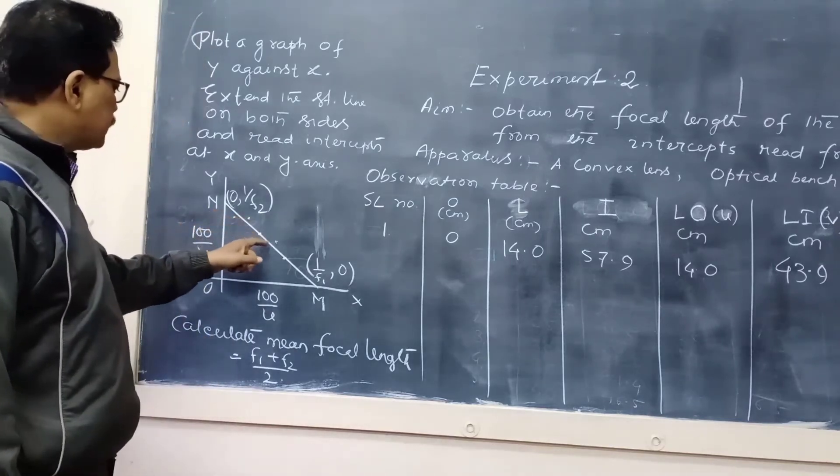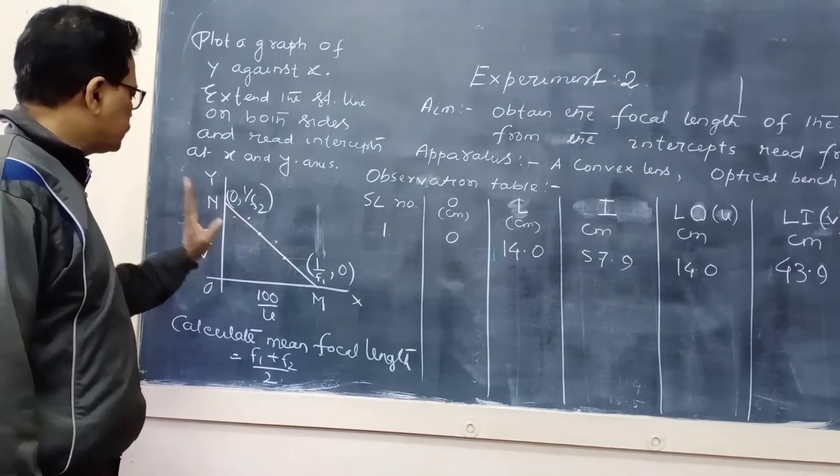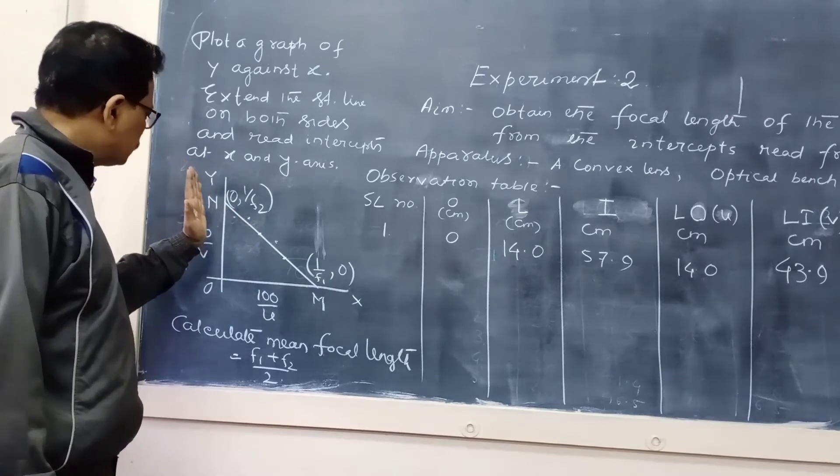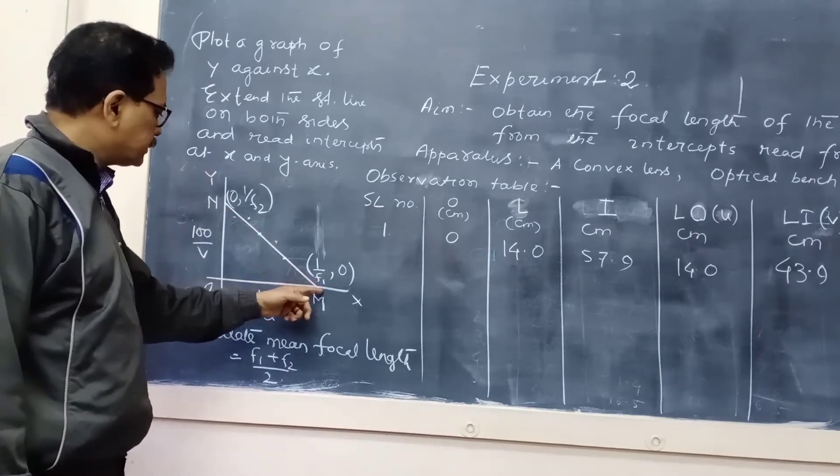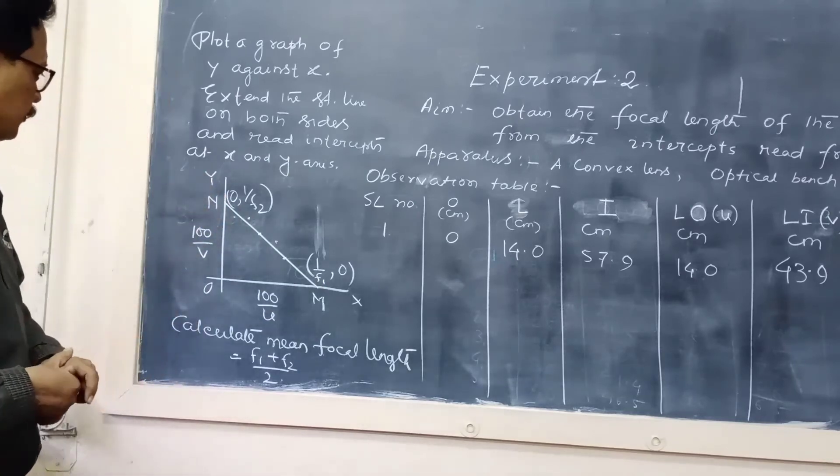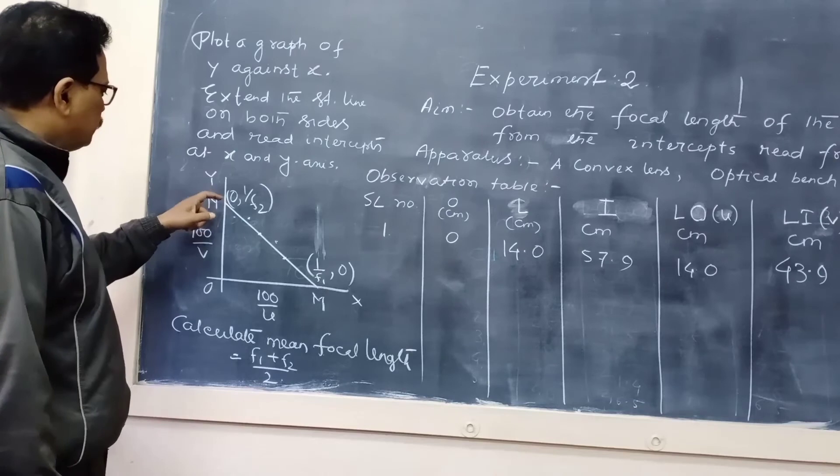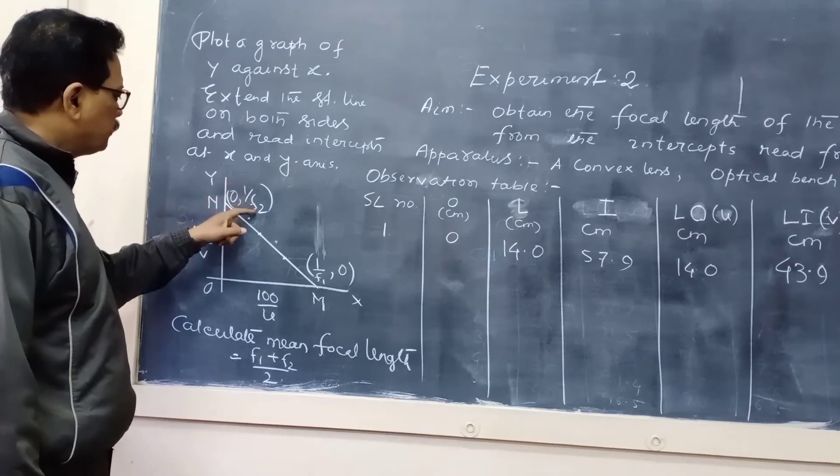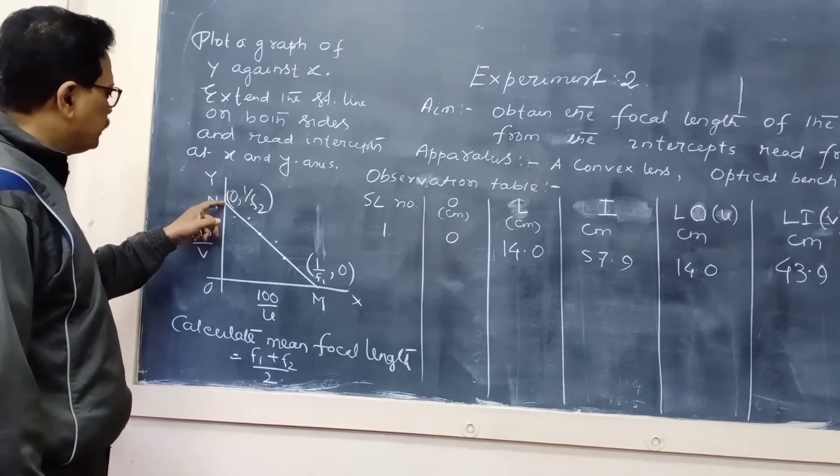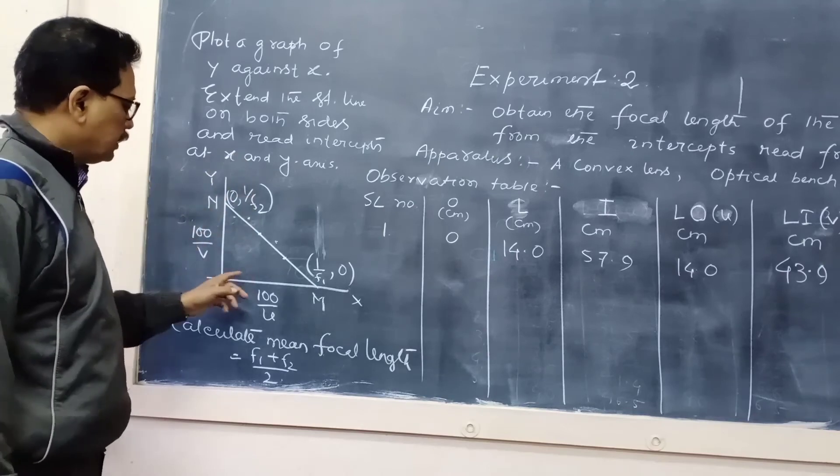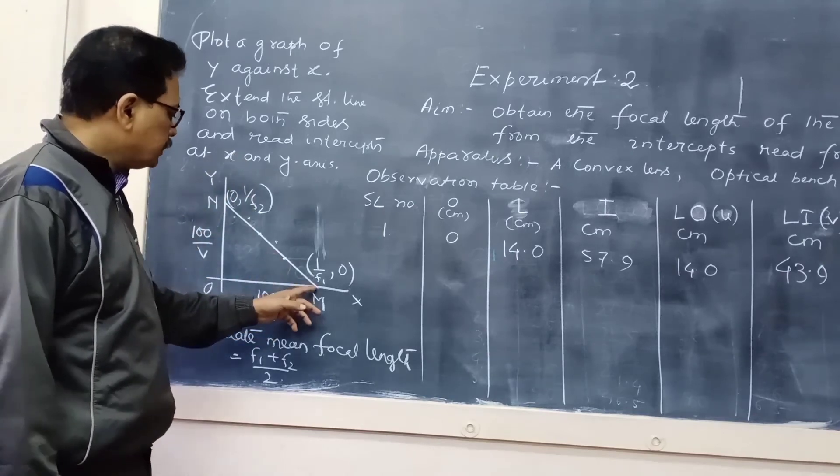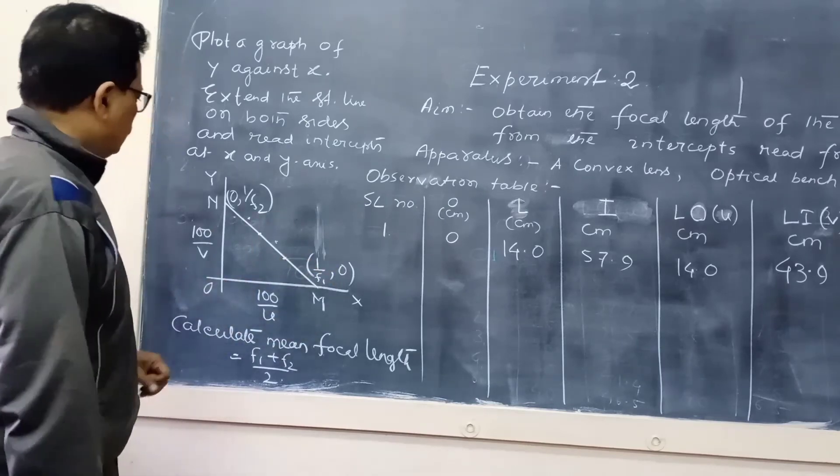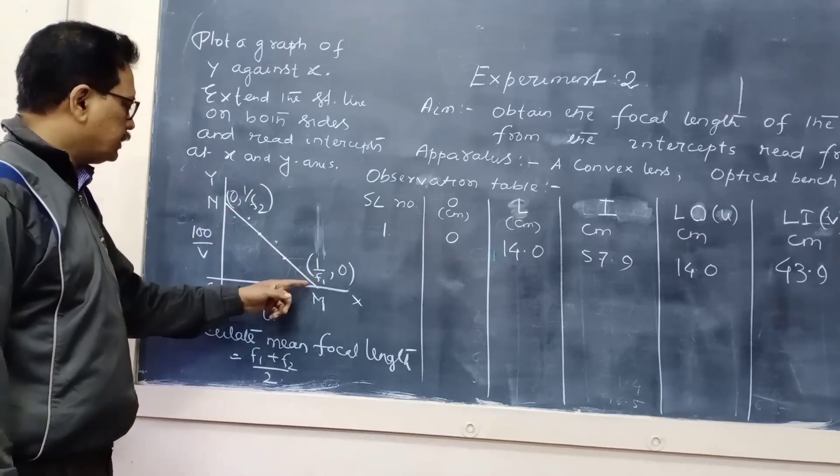This is the best fit line suppose, and in this line we have to extend the line on both sides so that the line intersects x as well as y axis. This point N, what is the coordinate of this point N that you note down? Let it is 0, 1 by f2. Whatever coordinate you are getting, that is 0, 1 by f2. At M point's coordinate, you read whatever coordinate you are getting, that is 1 by f1 comma 0. Now 1 by f2 and 1 by f1, these two values you are getting.